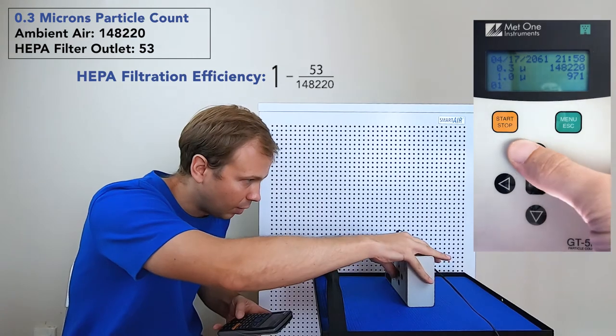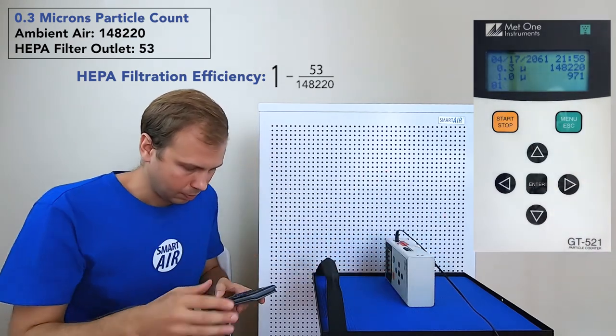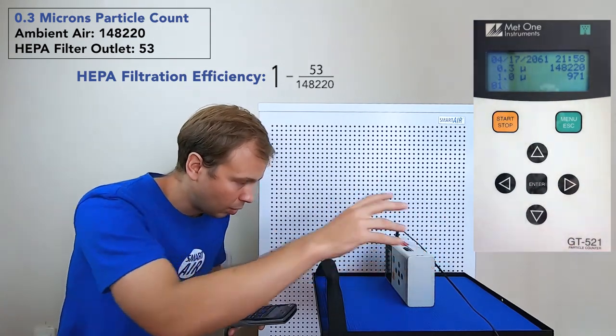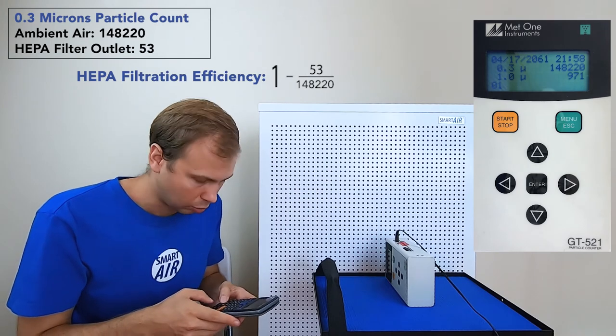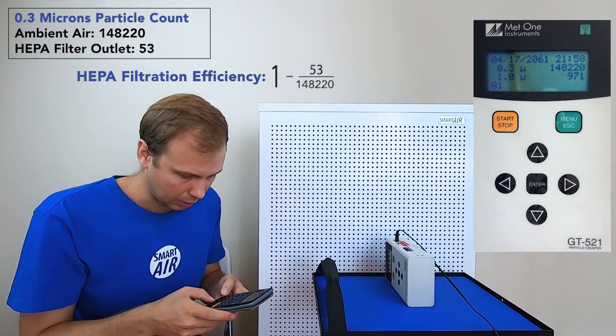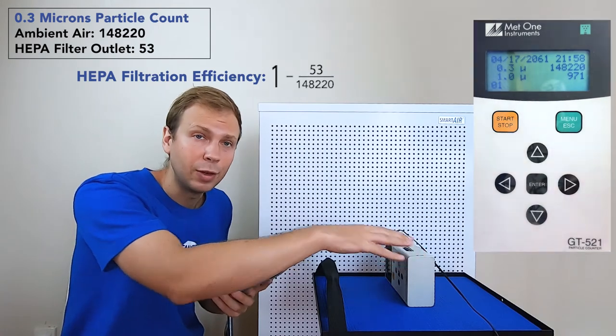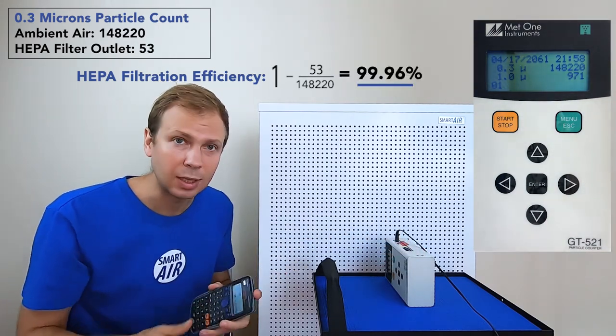We do 53 divided by 148,220, one minus that answer, and we get a filter efficiency of 99.96%.